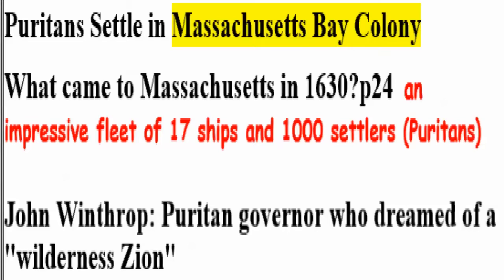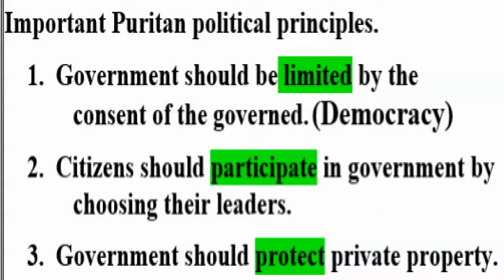Jonathan Winthrop was the Puritan governor who dreamed of a wilderness Zion — Zion meaning the City of God. This was also part of the errand in the wilderness and city upon a hill: the spiritual belief that we are doing something great for God here in Massachusetts. There were several important Puritan political principles — and they were also precedents, meaning examples followed in the future. Every time they passed a law or made an ordinance, all the rest of the world would see it — because they believed they were the city upon a hill.